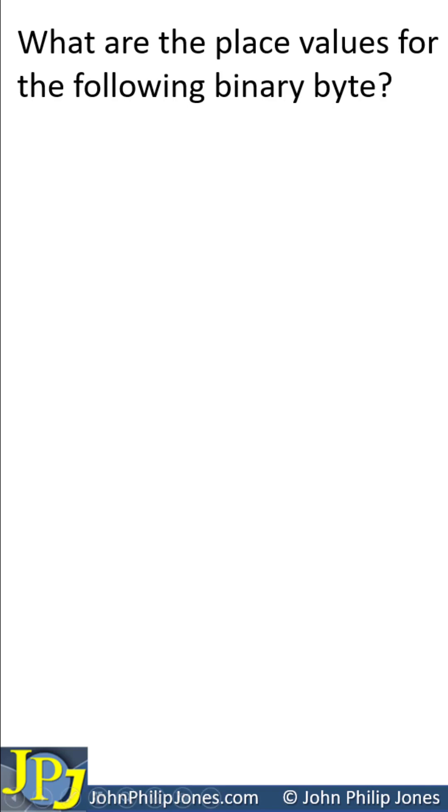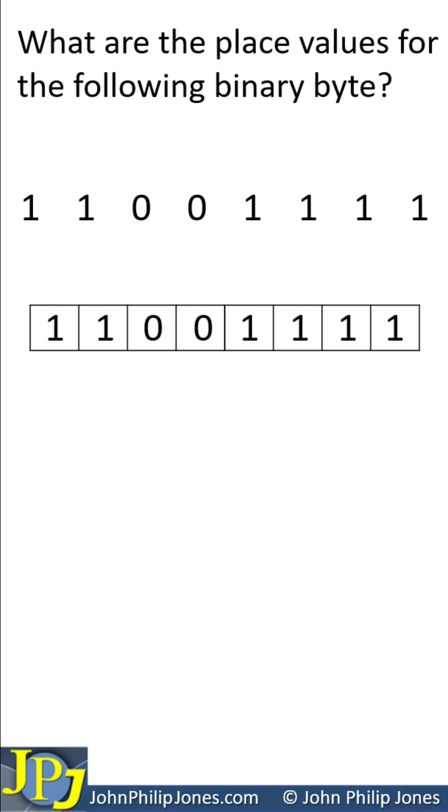What are the place values for the following binary byte? I'm going to place the byte into a grid and we're going to see that this is 2 to the 0.